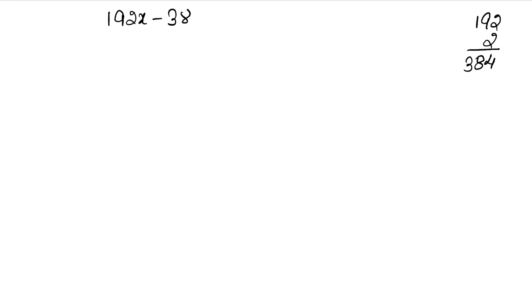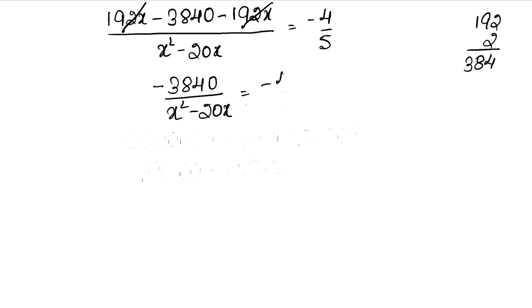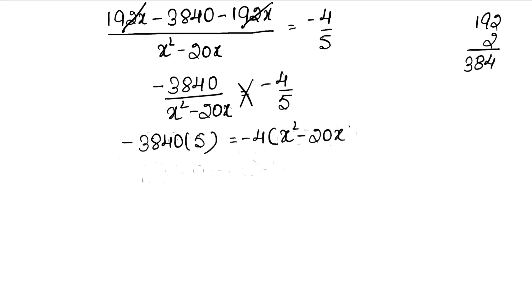Expanding the numerator: 192x minus 192 times 20, which is 3840, minus 192x. The 192x terms cancel, leaving minus 3840 over (x squared minus 20x) equals minus 4 over 5. Cross-multiplying: minus 3840 times 5 equals minus 4 times (x squared minus 20x). The minus signs cancel, giving 19200 equals 4x squared minus 80x.